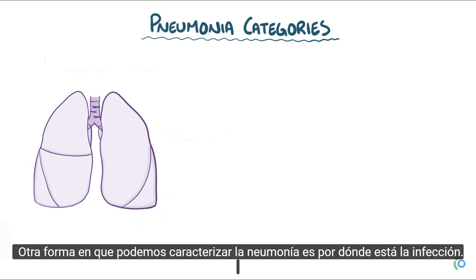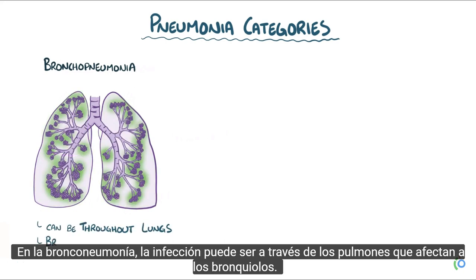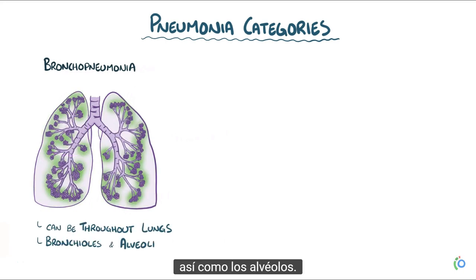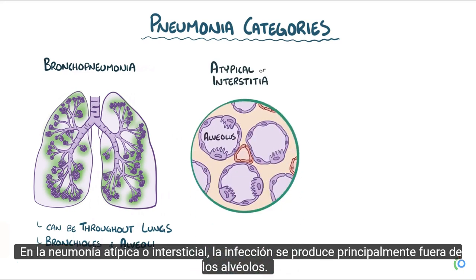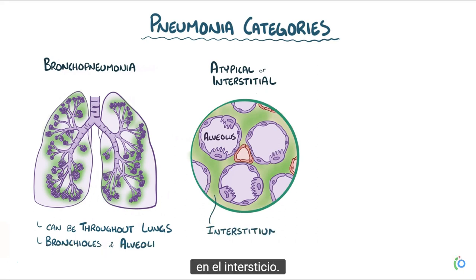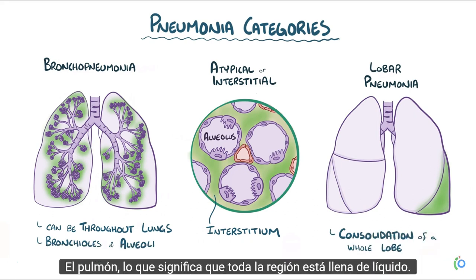Another way to characterize pneumonia is by where the infection is. In bronchopneumonia, the infection can be throughout the lungs, involving the bronchioles as well as the alveoli. In atypical or interstitial pneumonia, the infection is mainly outside the alveoli in the interstitium. And in lobar pneumonia, the infection causes complete consolidation of a whole lobe of the lung, meaning the entire region is filled with fluid.